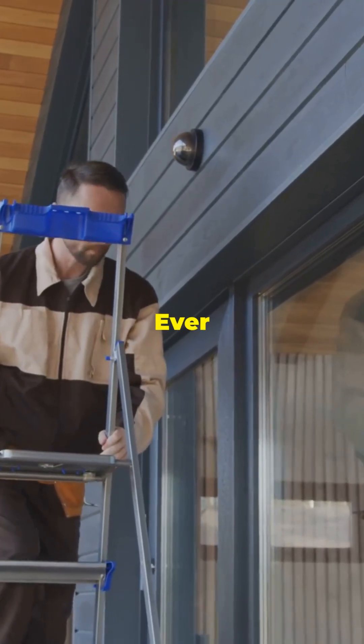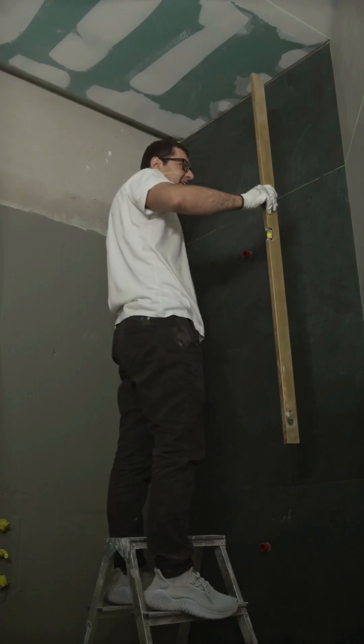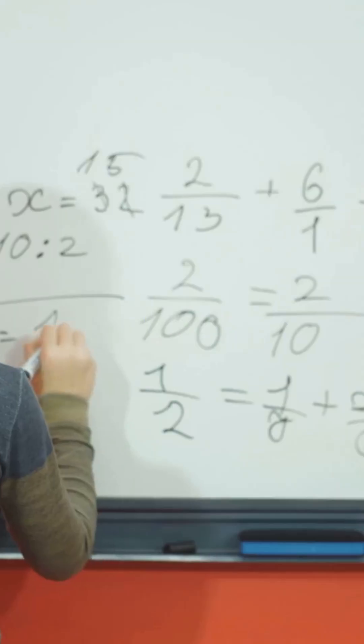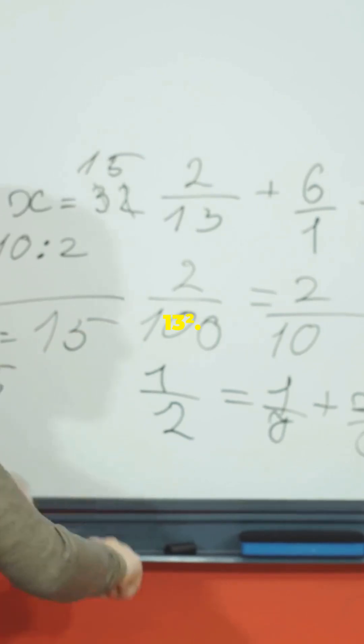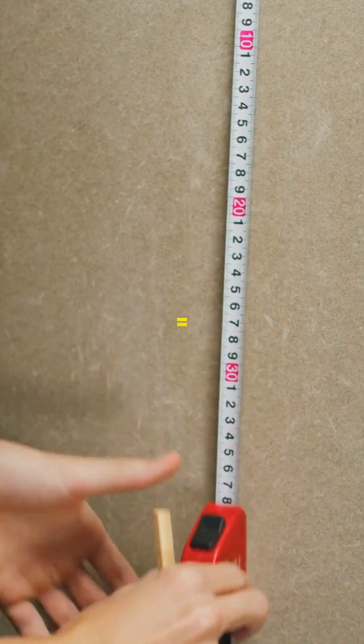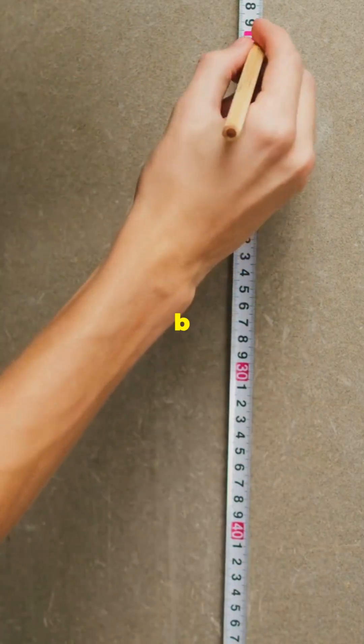Example 2: Ever leaned a ladder against a wall? If the ladder is 13m long and the base is 5m from the wall, how high up does it reach? Use the theorem: 5² + B² = 13². That's 25 + B² = 169. B² = 144. So B = 12m.